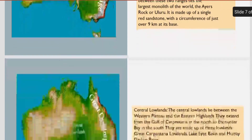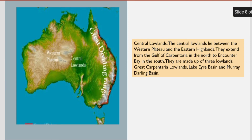The next physical division is the Central Lowlands, which lies in between the Western Plateau and the Eastern Highlands. They extend from the Gulf of Carpentaria in the north to Encounter Bay in the south. They are made up of three lowlands: the Great Carpentaria Lowlands, the Lake Eyre Basin, and the Murray-Darling Basin.